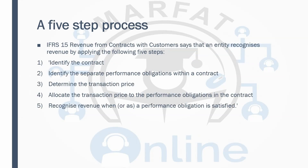The five-step model is COPAR. C stands for Contract — there should be a contract between two parties. When you talk about a contract, that means there should be a legally binding agreement between two parties.